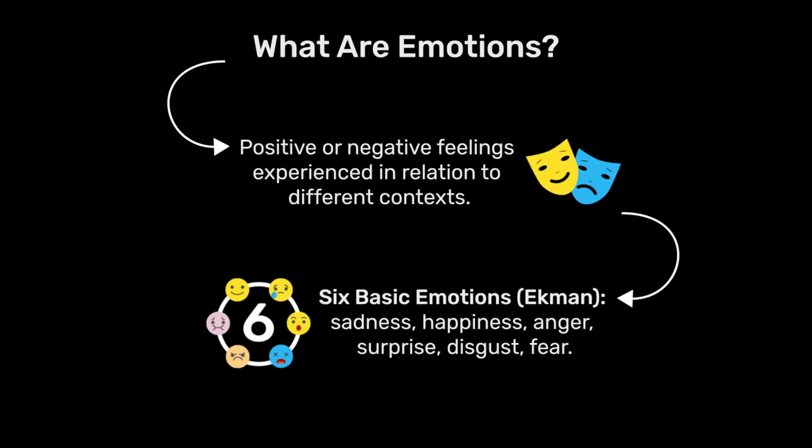It is said that there are probably six basic emotions, and a researcher called Ekman confirmed that these basic emotions are recognisable by all human beings wherever they live on the planet. These basic emotions include sadness, happiness, anger, surprise, disgust, and fear. These are emotions that we all recognise because all of us have experienced them.